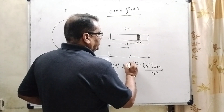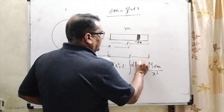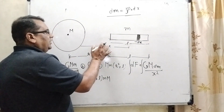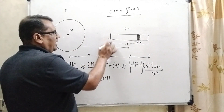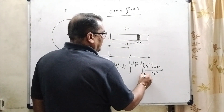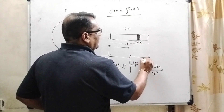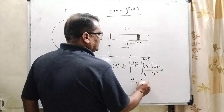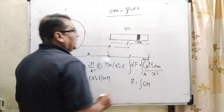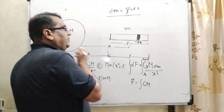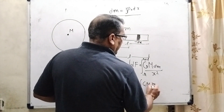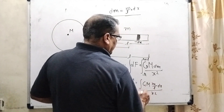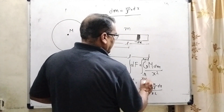We integrate both sides and put in the limits. The distance from the center to one end of the rod is r, and to the other end is r+l. So integrating dF gives F, and substituting the value of dm = (m/l)dx, we integrate from x = r to x = r+l.